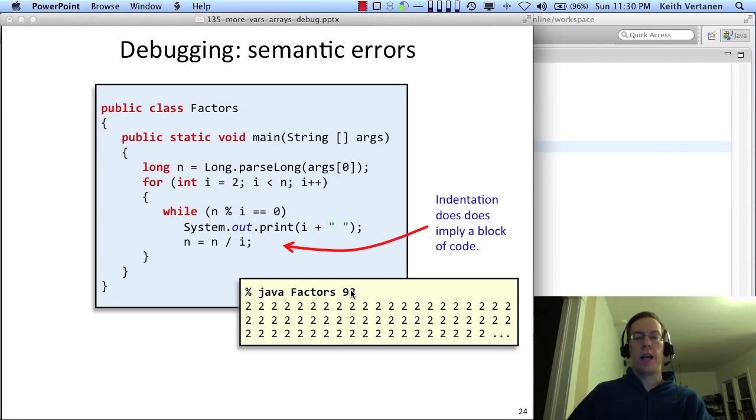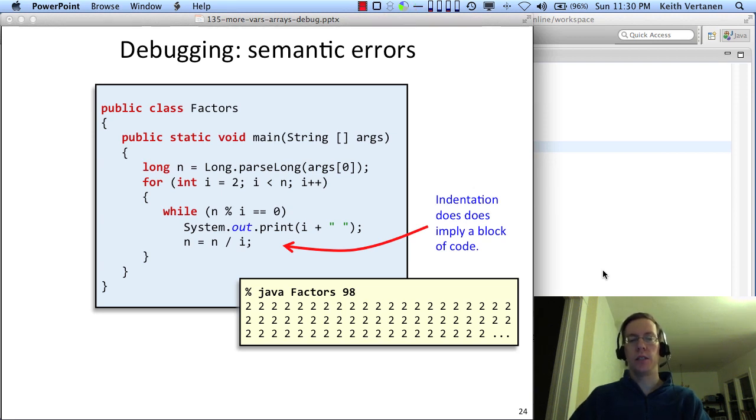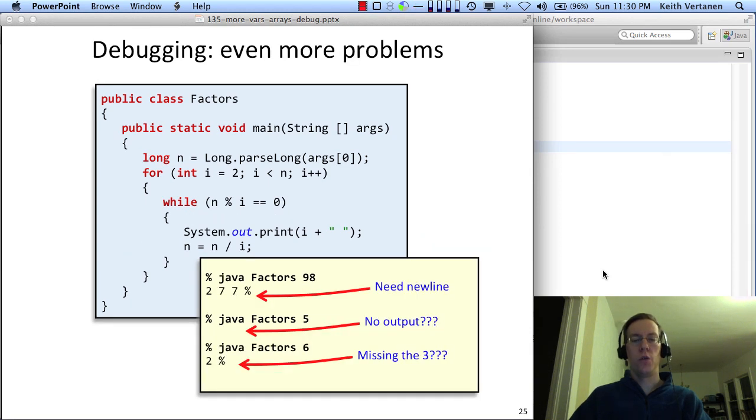Now I run it for 98 and hooray, it works, except it just prints out 2 and prints out 2 forever. I've already shown you the mistake here. Indentation does not imply a code block. Remember that Java ignores spaces and tabs and so on. Whether you indent or not, it doesn't influence the semantics of the code. We can fix that. We can put in some curly braces.